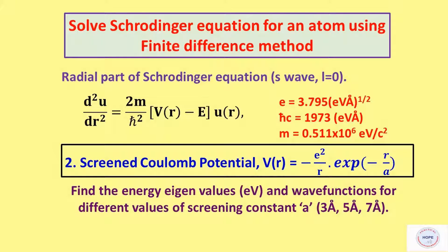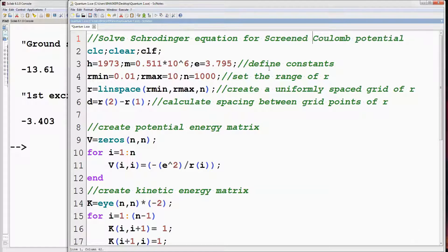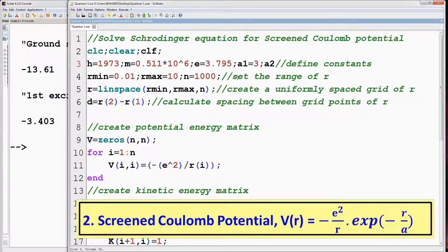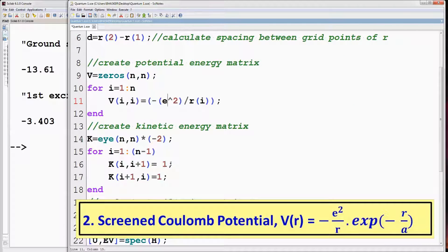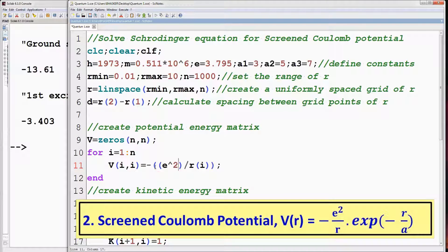Let's move on to the second case, that is screened Coulomb potential. Here V(r) is equal to minus e squared by r dot exponential of minus r by a, and we have to find energy eigenvalues and wave functions for different values of screening constant a. Let's modify the program accordingly. Change the title, define different values of screening constant: a1 equal to 3, a2 equal to 5, and a3 equal to 7 angstrom. Now change the potential also.